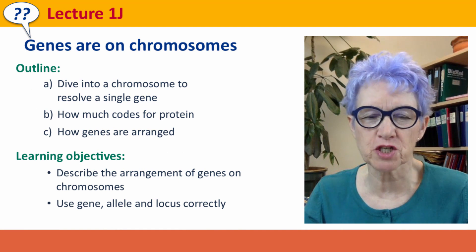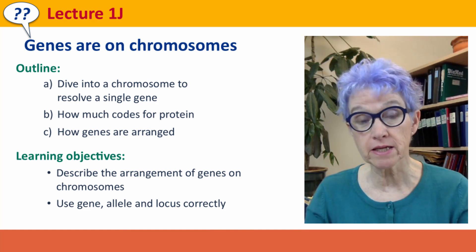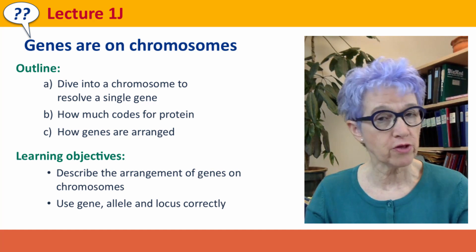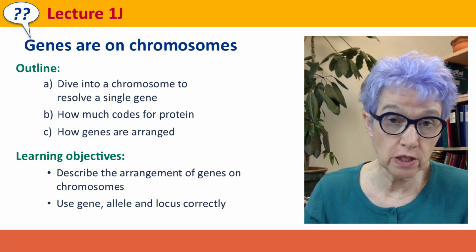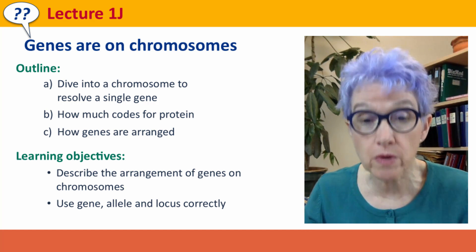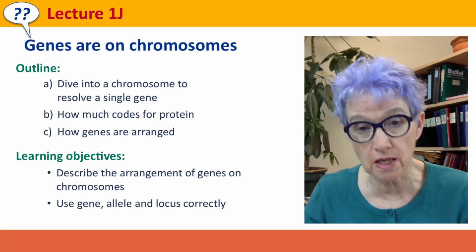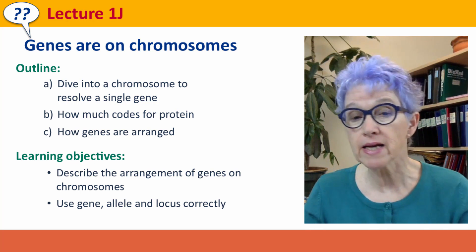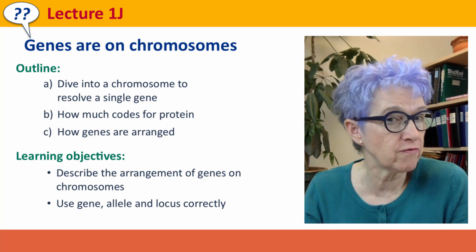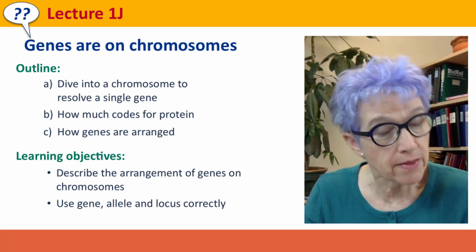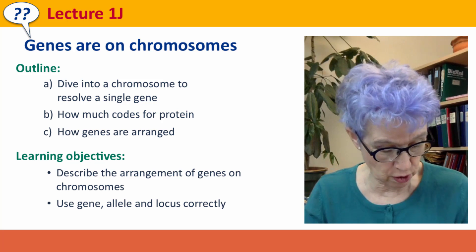Hi everyone, welcome back to Useful Genetics. This is lecture 1j, where we're going to continue our discussion of chromosomes to think about how the genes are arranged on the chromosomes. We're going to dive into a chromosome and zoom in until we can resolve a single gene, get a sense of what the gene looks like at a chromosome scale, how much of the gene codes for a protein, and then zoom in on a different gene to see how genes are arranged on the chromosomes.